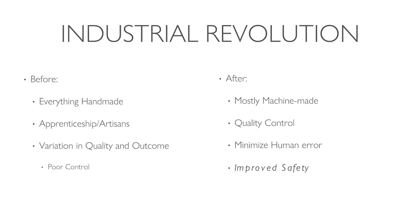The Industrial Revolution is not something we typically think about in medicine, but there are analogies to what we're experiencing now with orthopedic robotics. Prior to the Industrial Revolution, everything was handmade. People went and did apprenticeships with master craftsmen, and consequently the manufactured products varied in quality and outcome — there was poor quality control. After the Industrial Revolution, most things became machine-made and quality control became much better. The goal is really to minimize human error and to improve safety — in our case, safety for our patients.